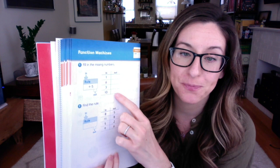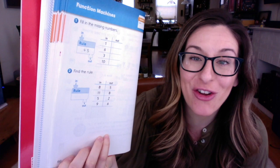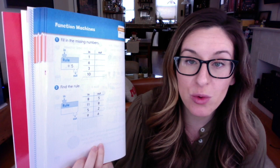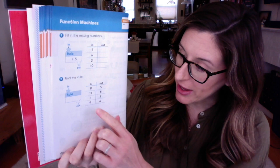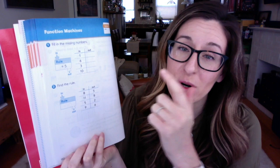Number 2 says find the rule. Here they're showing us all the in and all the out numbers, which is kind of nice. We just have to figure out what's the rule — what did the function machine change those numbers by? First of all, we have an 8 that went in and a 5 came out. Can you count on your fingers, draw a picture, or count in your brain to figure out what is 8 minus 5?